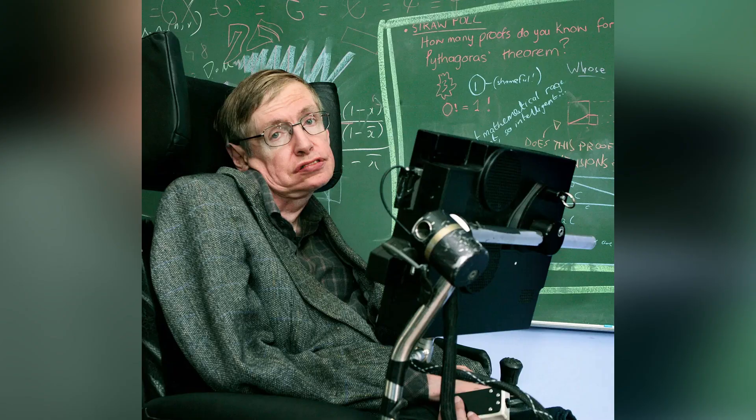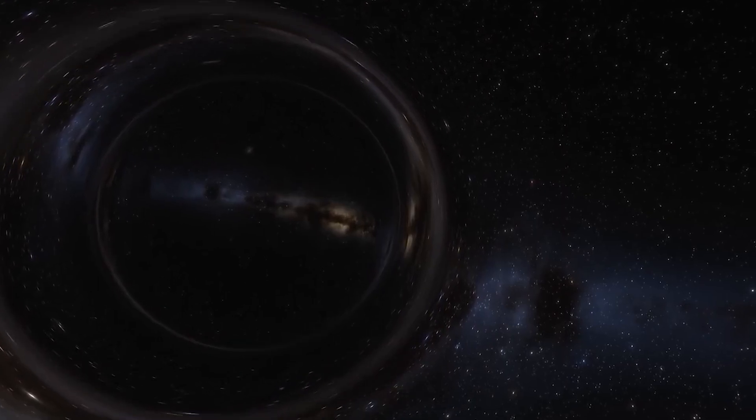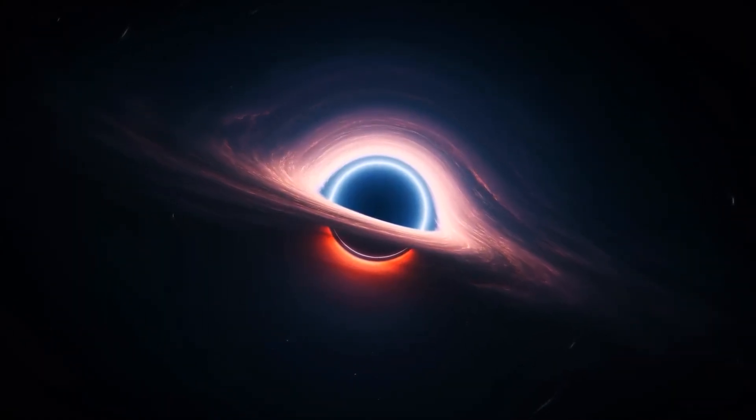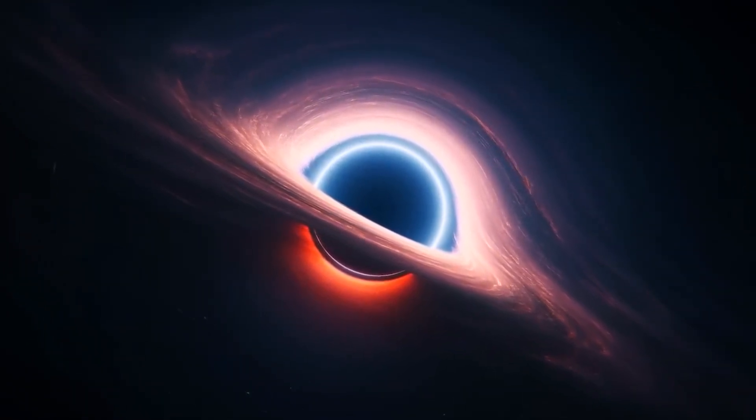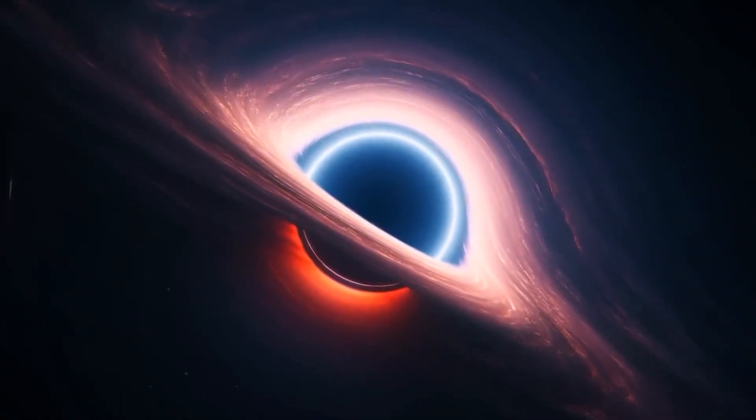A groundbreaking insight from Stephen Hawking reveals that black holes also undergo evaporation. This happens as virtual particles appear at the edge of the event horizon. On rare occasions, one particle is swallowed by the black hole, turning the other into radiation, the so-called Hawking radiation. This process allows the black hole to gradually lose its mass over an incomprehensibly long period.